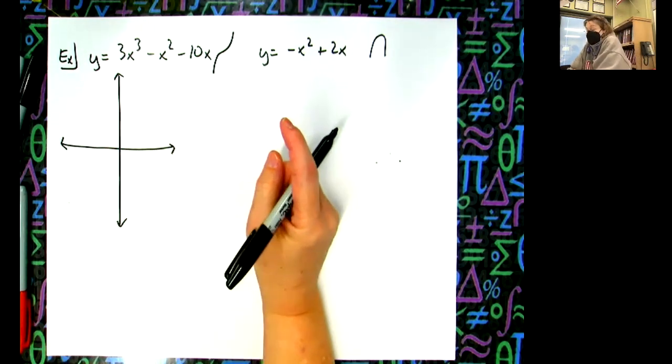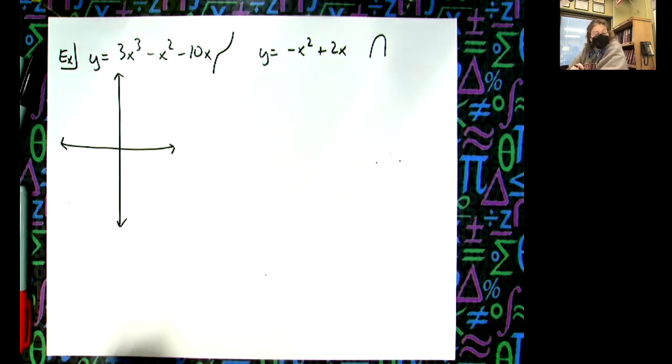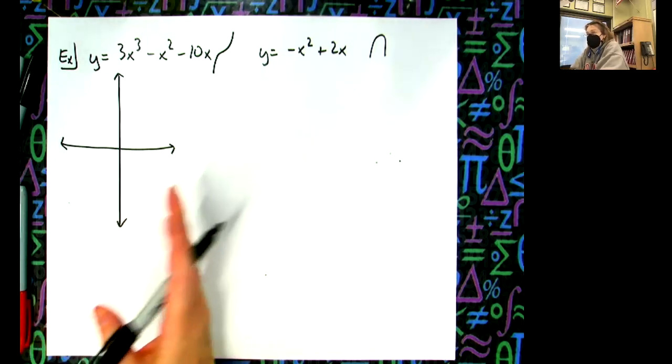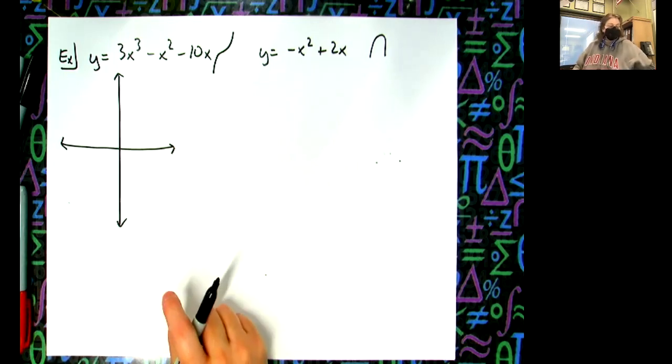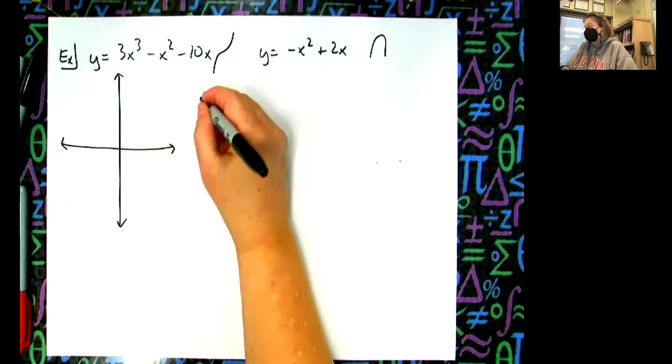Let's see what I would do. If you wanted to be really a little bit more accurate on this, you might find your points of intersection first. That's going to kind of give you an idea on how to draw your thing. So let's go ahead and find those points of intersection first.